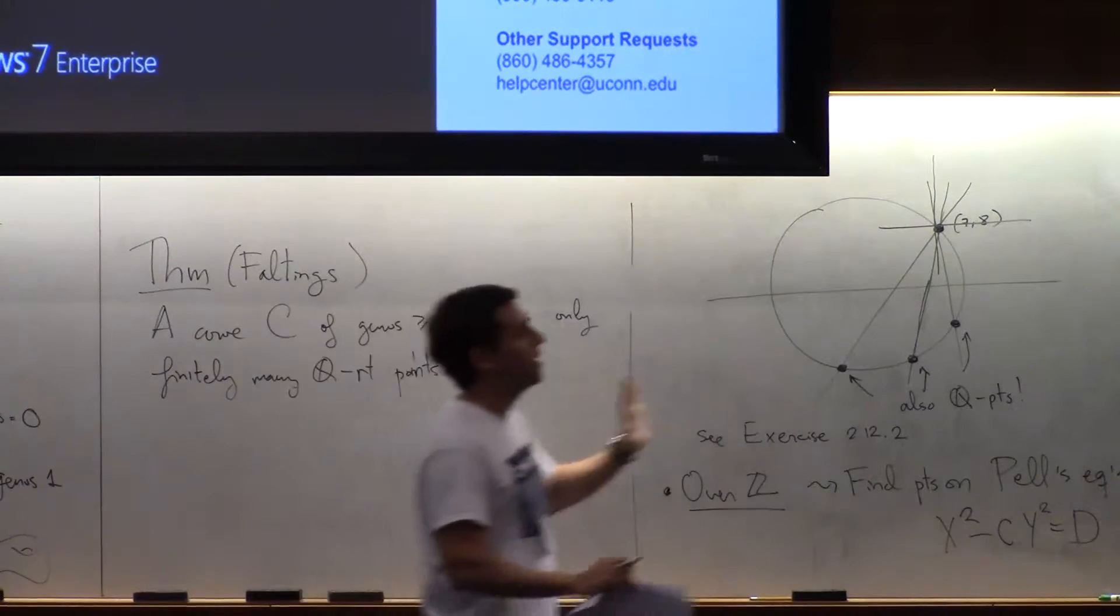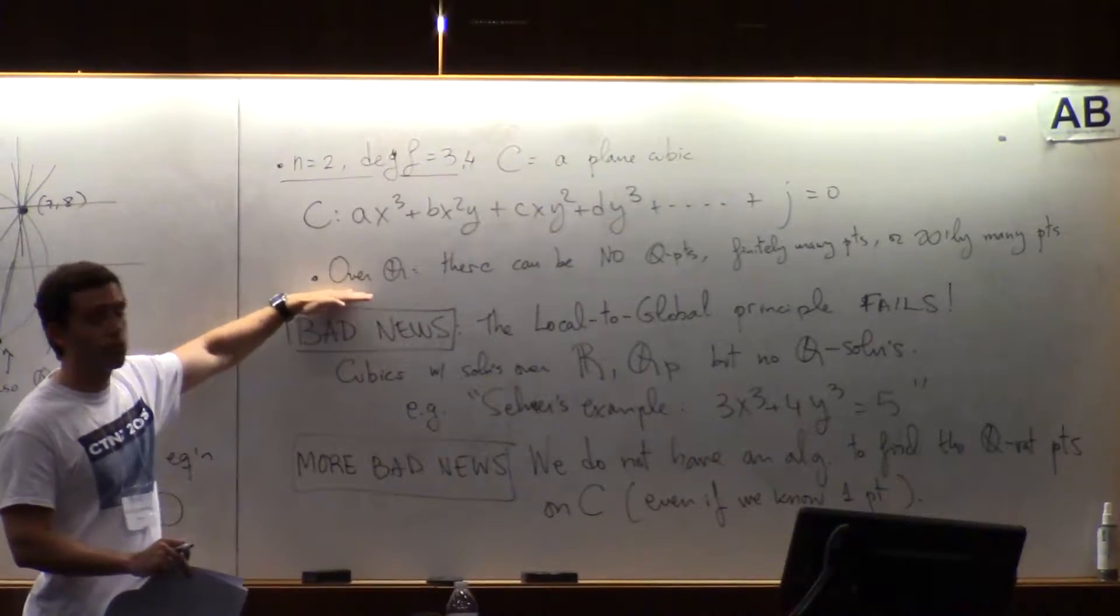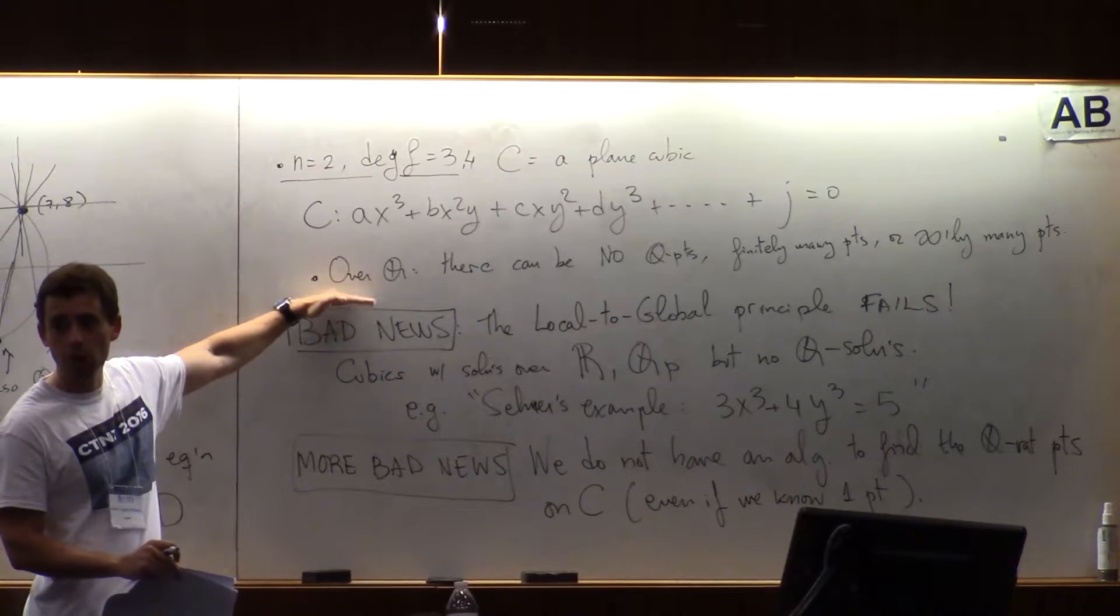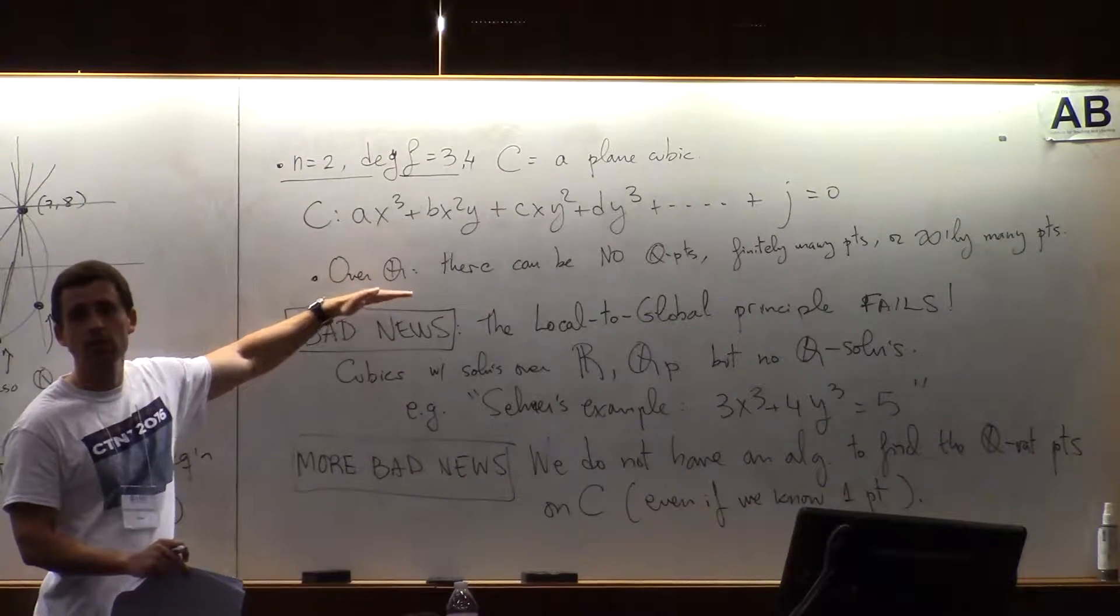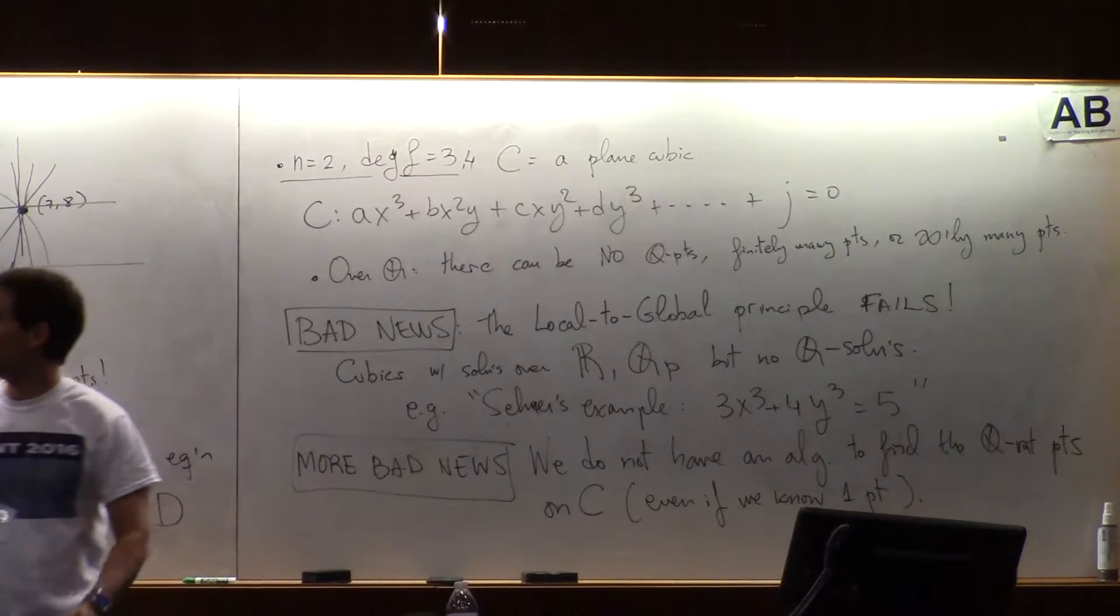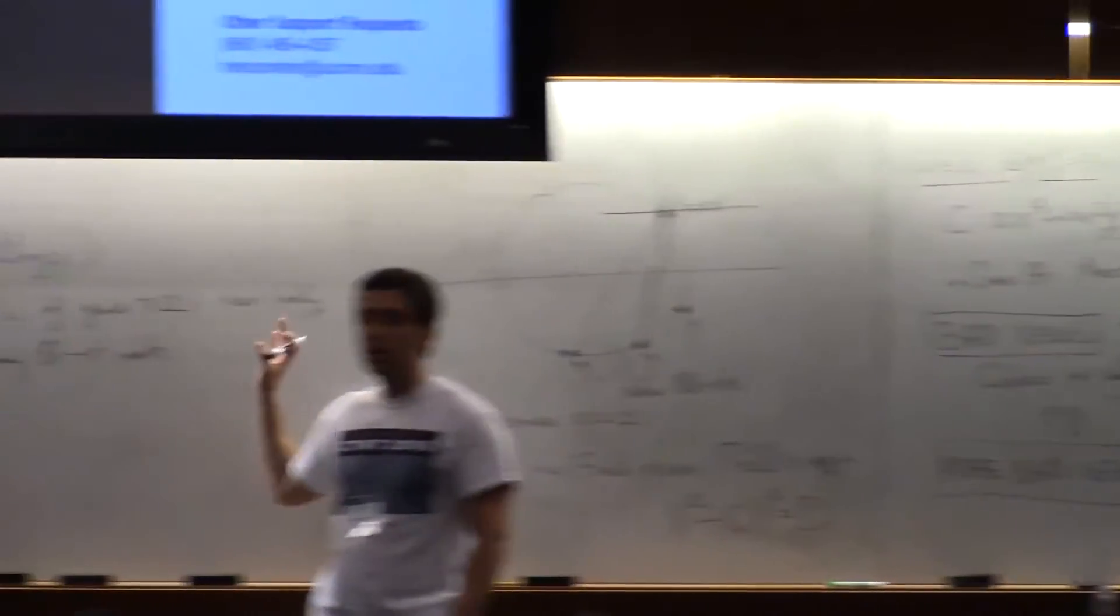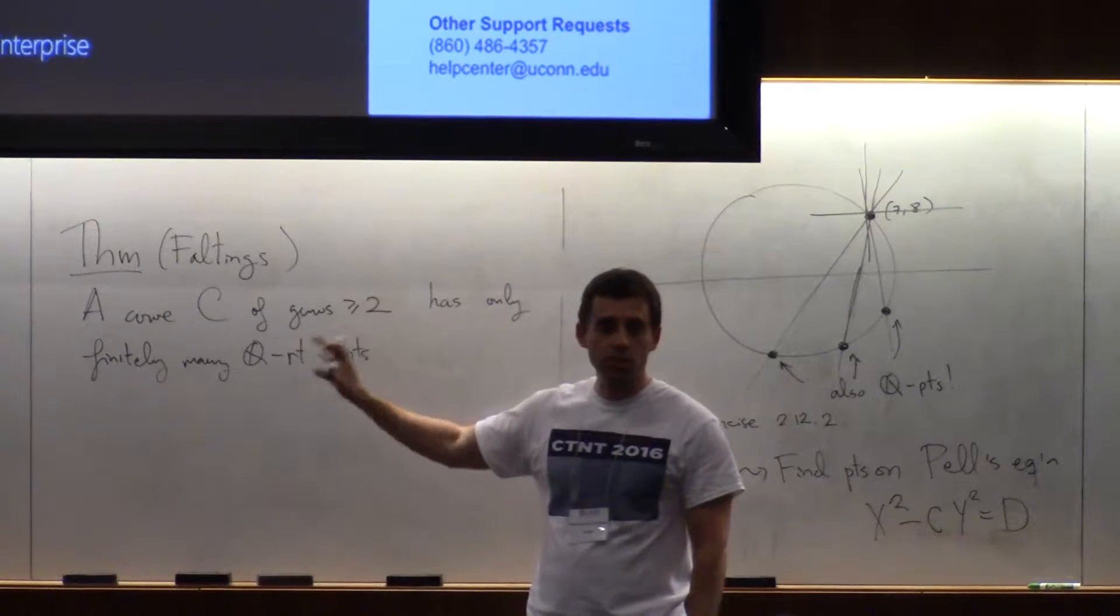So in a sense, the elliptic curve case is the richest of them all. Because all the possibilities can happen, you can have four points, finitely many points, or infinitely many points, and everything else after that, you will have to find finitely many points.